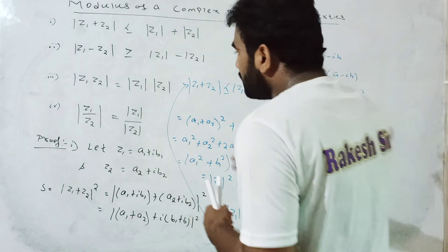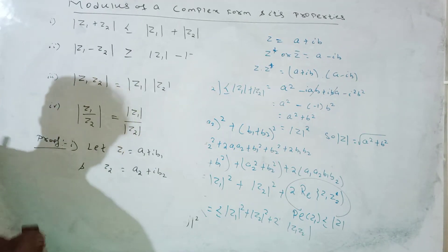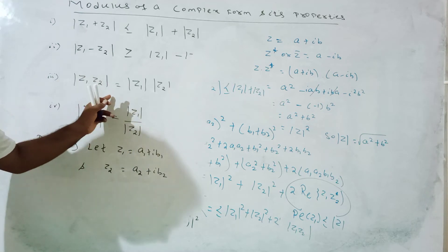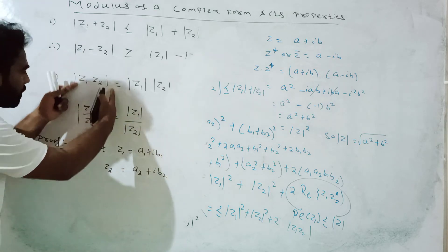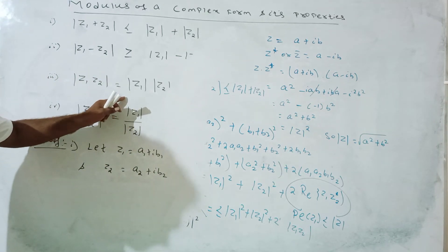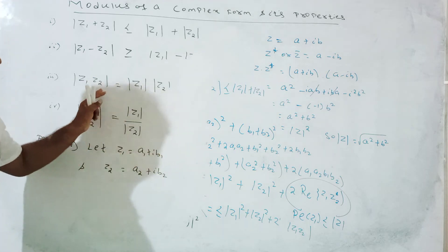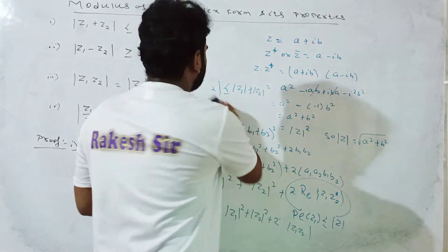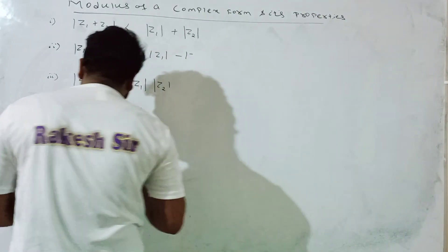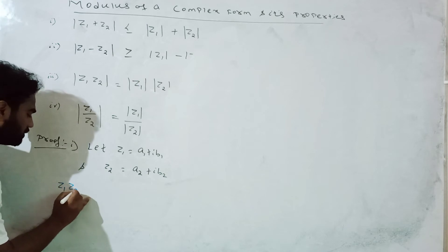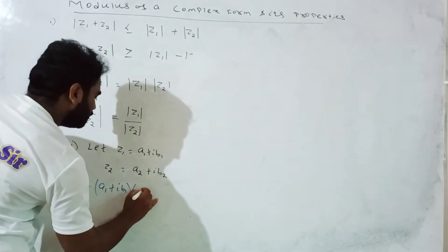The third form is the multiplication form. The modulus of the product of two complex numbers equals the product of their individual moduli: the modulus of z1 times z2 equals the modulus of z1 times the modulus of z2. I will prove this the same way. Let z1 equals a1 plus ib1 and z2 equals a2 plus ib2.